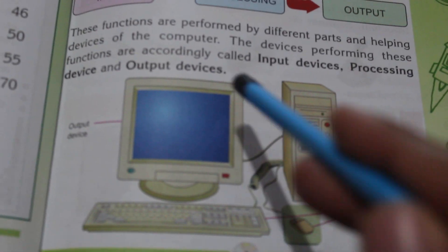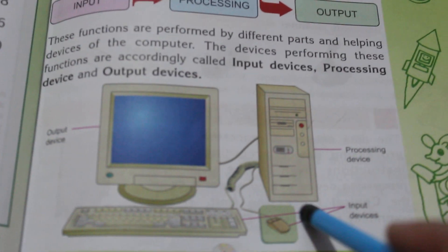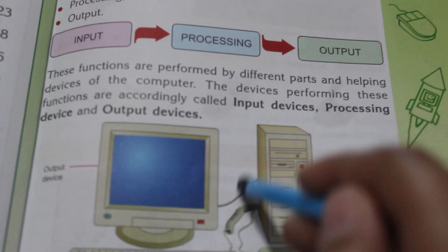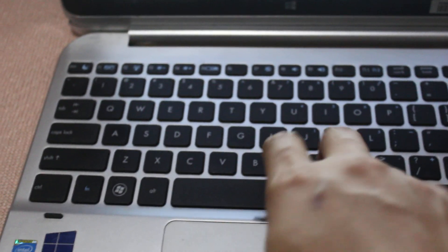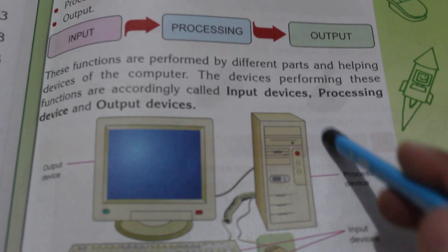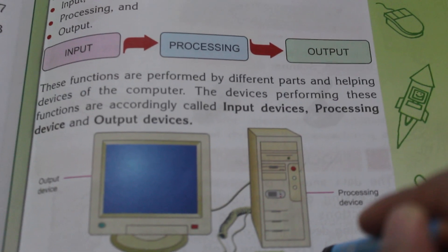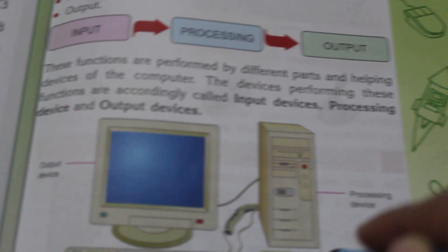Here is a picture of a computer — a monitor, a keyboard, a mouse, and a CPU. The keyboard and mouse are input devices. On my laptop, the keyboard and touchpad are the two input devices. The CPU is the processing device, and the monitor — or on a laptop, the screen — is the output device.